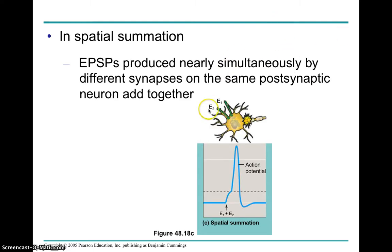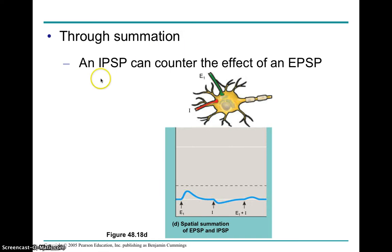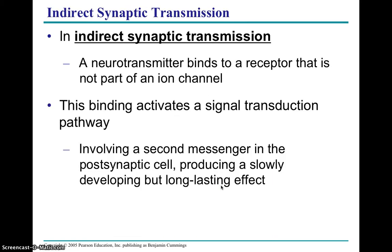In spatial summation, you have multiple synaptic terminals reaching the cell at the same time. As a result, EPSP1 and EPSP2 occur simultaneously, creating a strong enough depolarization to reach threshold and fire an action potential. This is spatial summation. An IPSP can also counter the effects of an EPSP — a different synaptic terminal causing a hyperpolarization versus an EPSP causing a depolarization. In quick succession, you get an IPSP that takes it below rest, and as a result, you don't get any action potential firing. These are all different forms of summation.